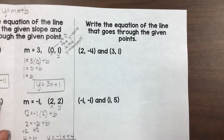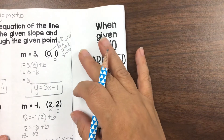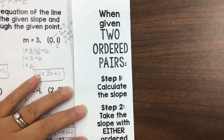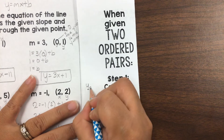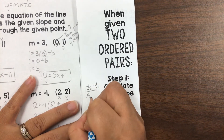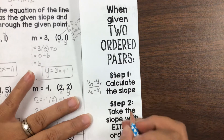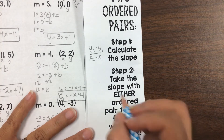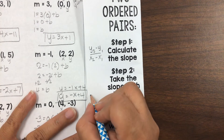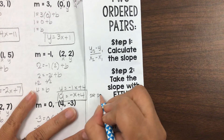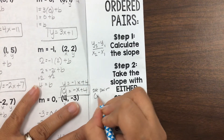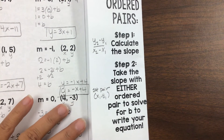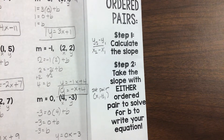On this side, what we need to remember is the equation of slope. We're going to fold it over halfway. It says when you're given two ordered pairs, step 1 is to calculate the slope: that is y2 minus y1 divided by x2 minus x1. Then take the slope with either pair, but what I always do is use the first ordered pair, which is x1, y1, to solve for b and to write your equation.